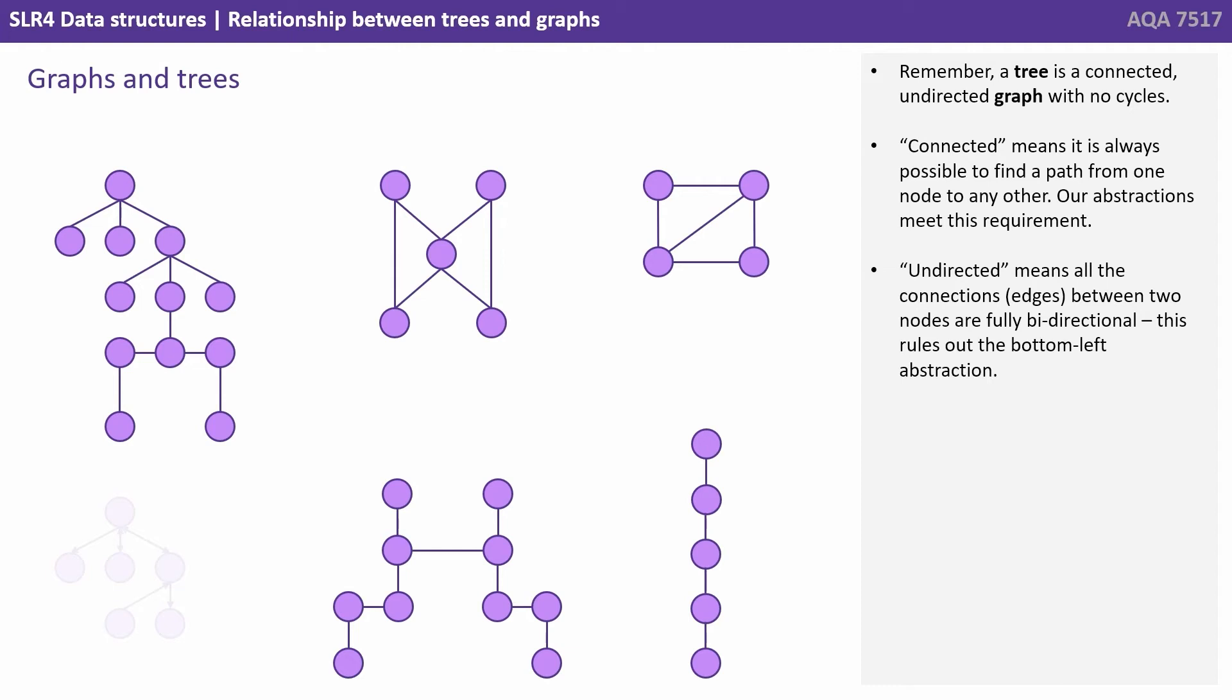Undirected means all the connections or edges between two nodes are fully bi-directional, so this rules out our bottom left abstraction.